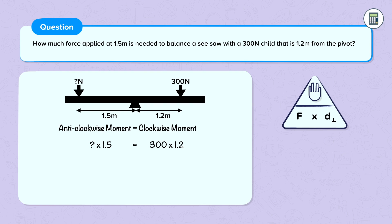In equilibrium, the anti-clockwise moment equals the clockwise moment. So our mystery force times 1.5, moment is force times distance, is 300 times 1.2. So calculating that clockwise moment, we have 360.